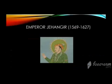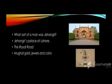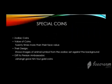Emperor Jahangir's era was from 1569 to 1627. We have discussed what sort of a man Jahangir was, his palace at Lahore, the royal road — the most famous one which connected two different cities, Agra and Lahore, in the subcontinent at that time. We also discussed Mughal gold, jewels, and coins — special coins representing Zodiac signs.